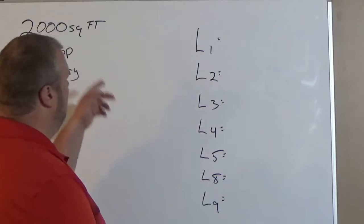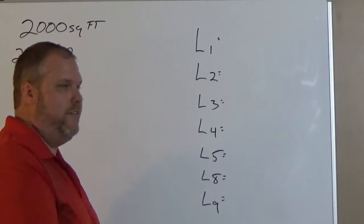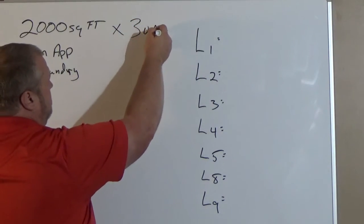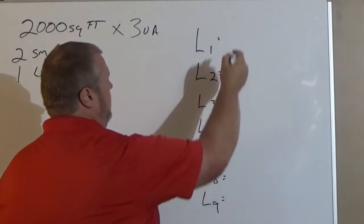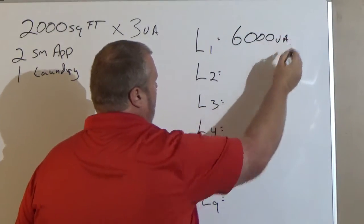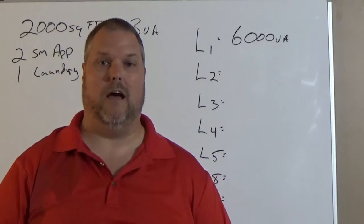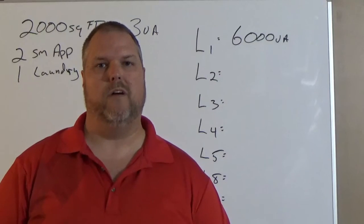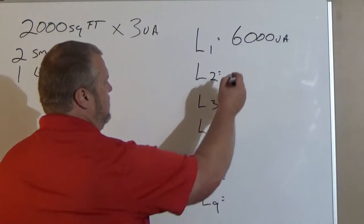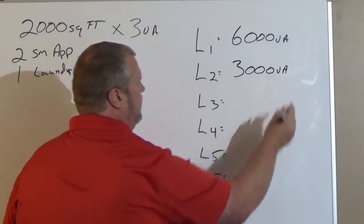First things first, line 1: 2,000 square feet, multiply it by 3 VA, it's going to give us 6,000 VA. 6,000 goes in line 1. Line 2 is our small appliance line. We're doing it to code, we know we have 2. So we're going to put 3,000 VA in line 2.